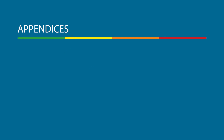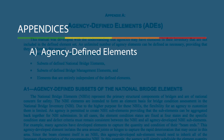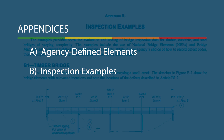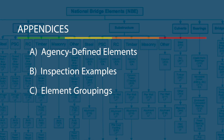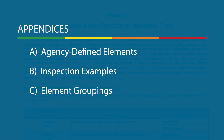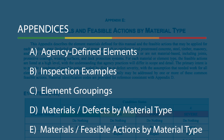The five appendices in the manual include A, Agency Developed Elements; B, Inspection Examples; C, Element Groupings; D, A Listing of Element Defects by Material Type; and E, A Listing of Feasible Actions by Material Type.